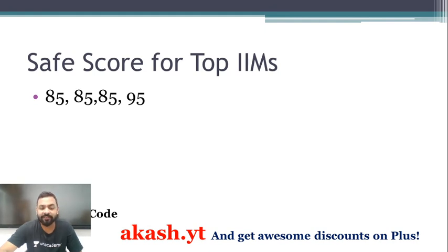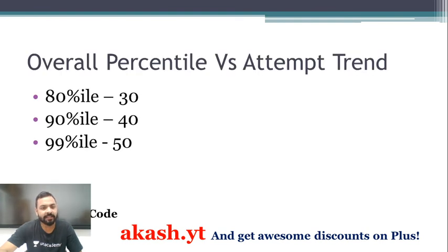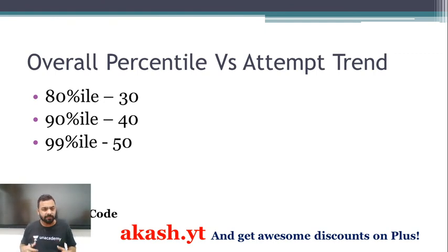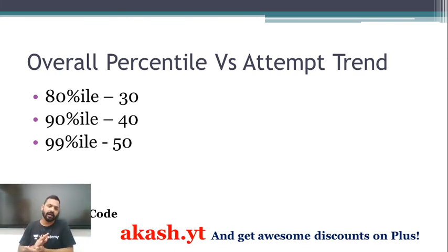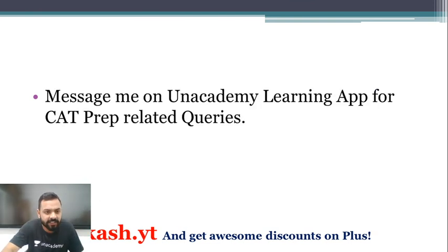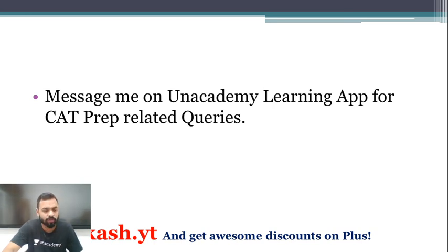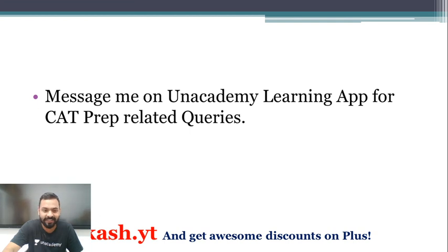Remember the magical figure: 85-85-85-95. These trends are not rigid, but they give you a direction. If you have any queries related to CAT or other MBA entrance examinations, you can message me on the Unacademy learning app. Good luck, take care, happy learning — namaskar and shukriya!